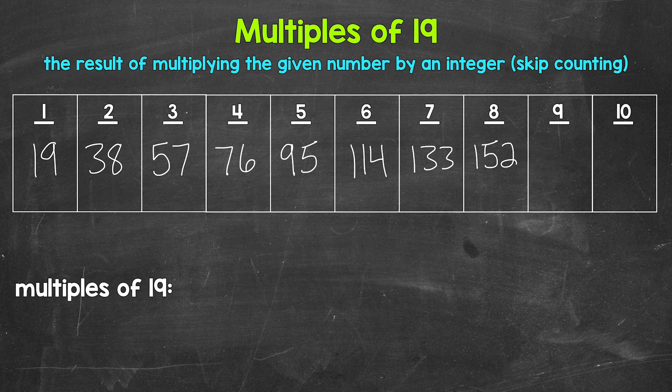Nine times 19, 171. And 10 times 19, 190. Those are the first 10 multiples of 19.